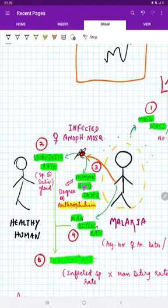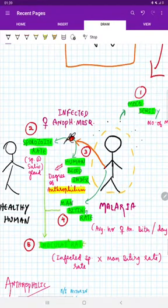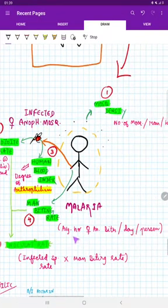Next is man biting rate. Man biting rate means the average number of female Anopheles mosquitoes that is biting the man per day. That is called man biting rate.